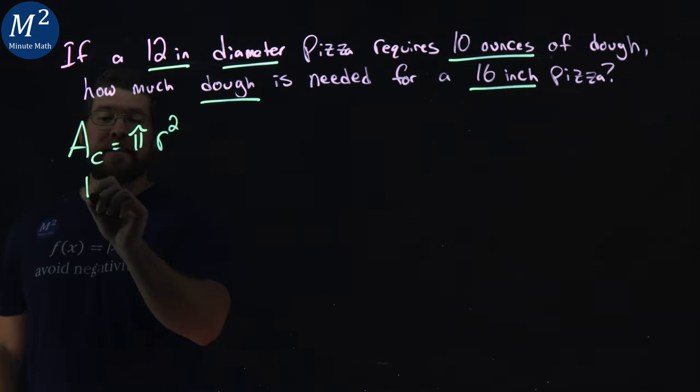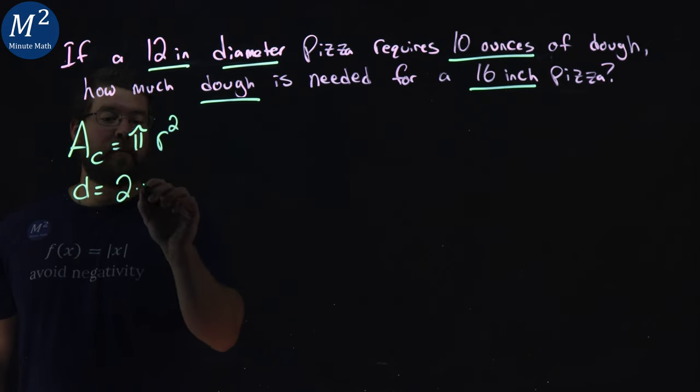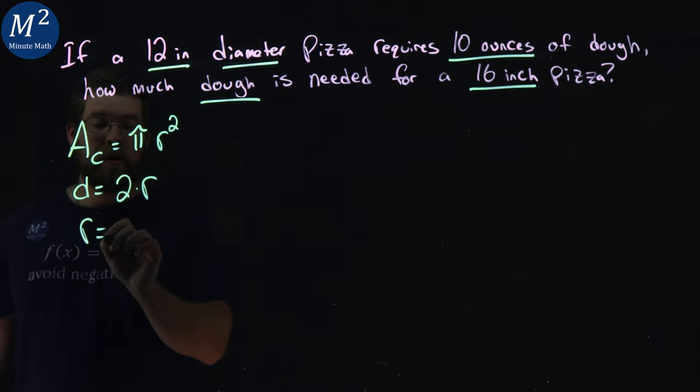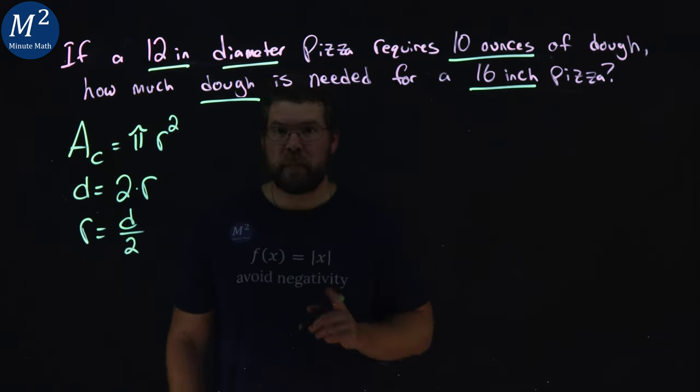And we know that diameter is equal to 2 times the radius. Or similarly, our radius is our diameter divided by 2.